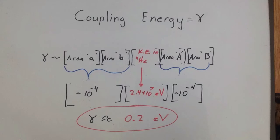We can plug in the numbers and we get about 0.2 electron volts. This is just an order of magnitude considering the wave functions used.